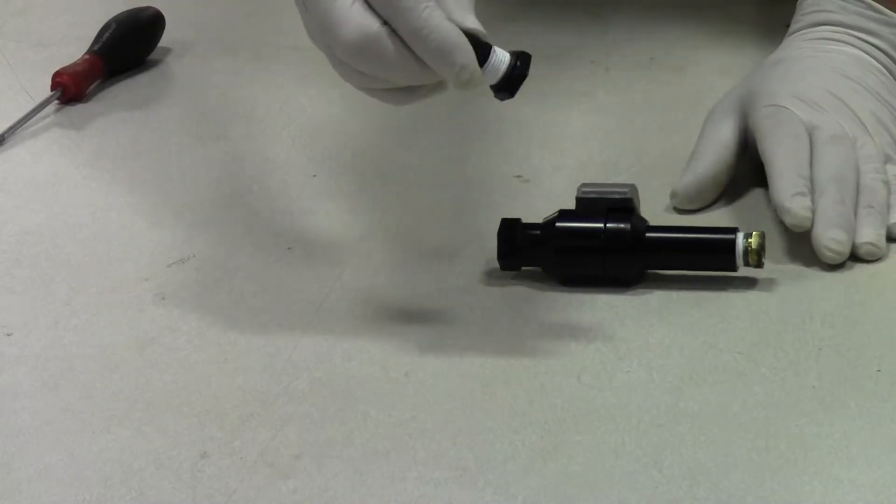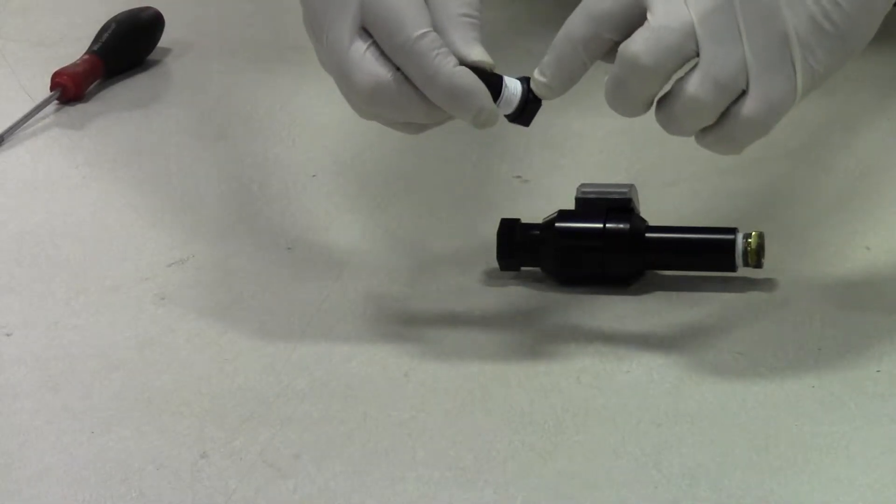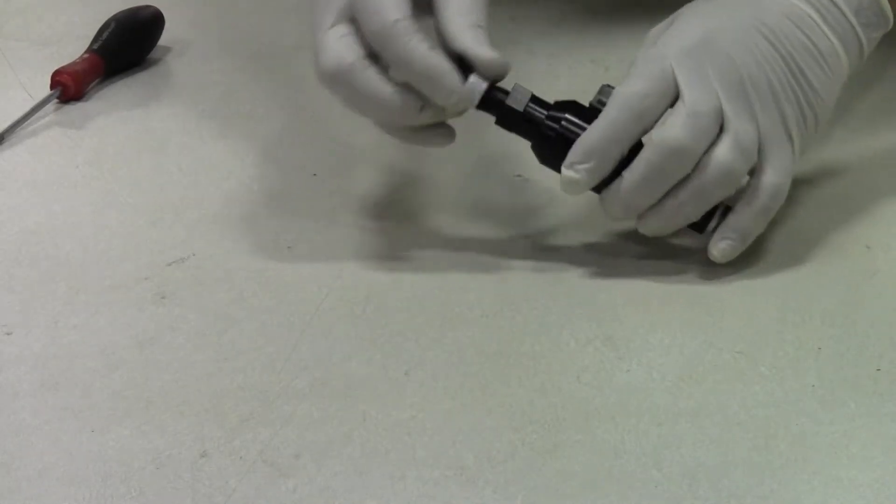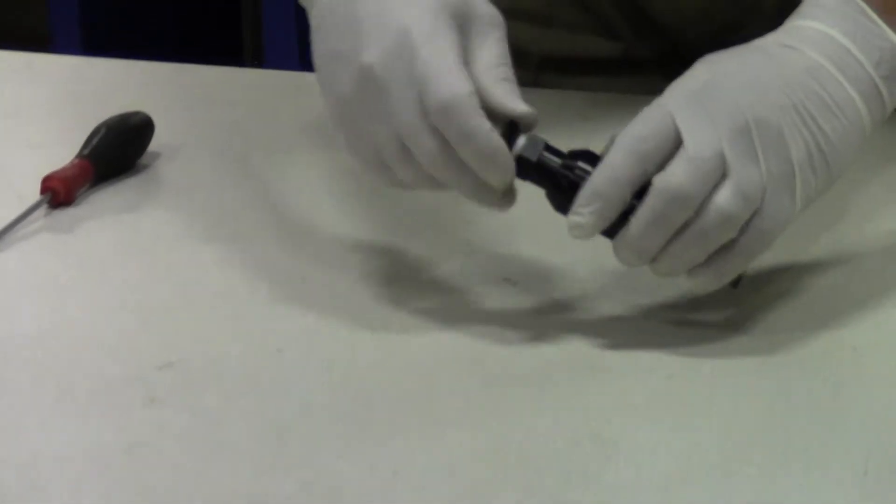If you notice on the air inlet fitting, there's o-rings on the fitting. When you are putting the fitting back on inside the barrel, you do not need to over tighten the fitting. This o-ring will seal.